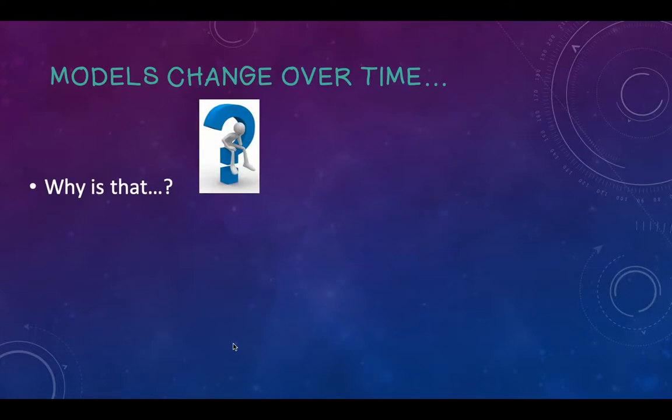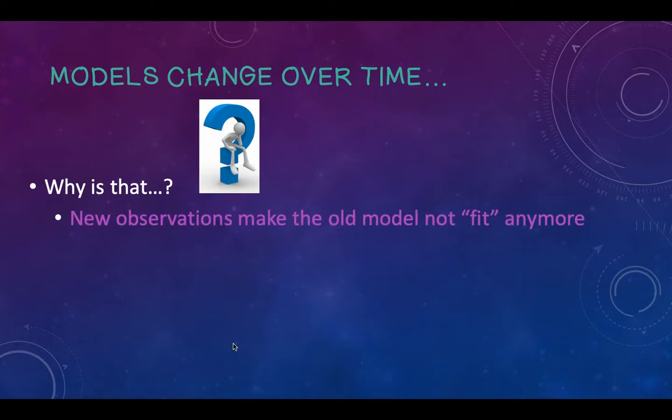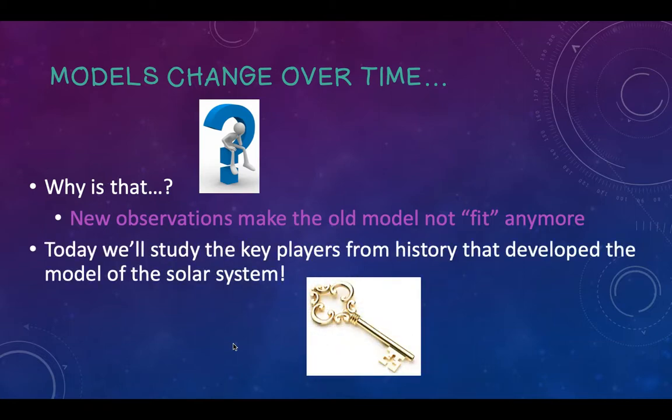Let's talk quickly about models changing over time. The reason that models change over time is because people make new observations — this could be because of a new person or better technology. Because there are new observations, the old model sometimes doesn't fit anymore. So today we're going to study the different key players from history that developed the solar system model we think of as the model of our solar system today.